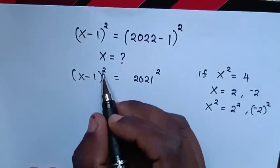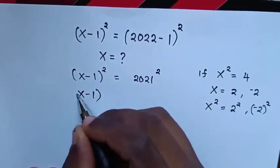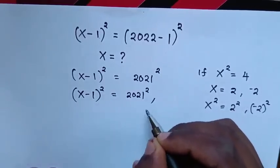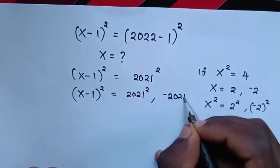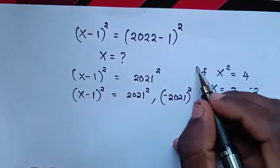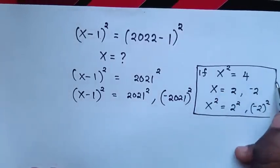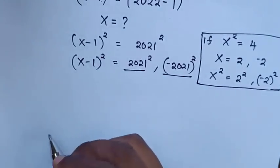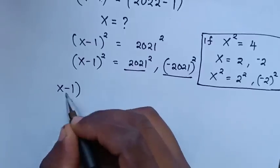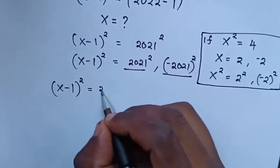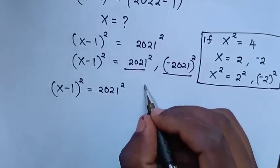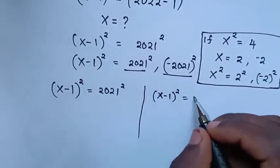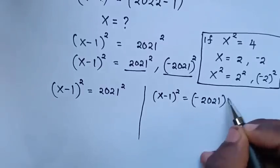We'll have 2 answers. So (x-1)² = 2021² or (x-1)² = (-2021)². We'll have 2 cases: (x-1)² = 2021² and (x-1)² = (-2021)².